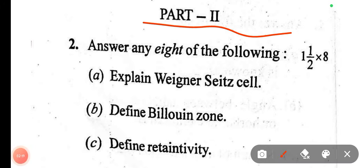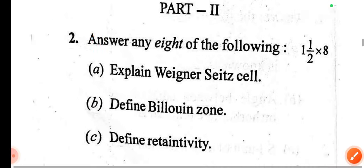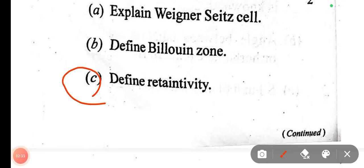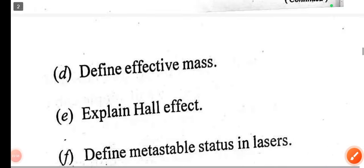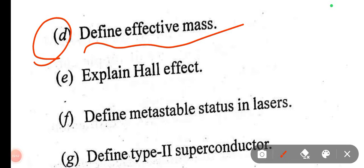Part 2 of the unit: explain where the Wigner-Seitz cell is. Then define the Brillouin zone. Then define retentivity. Define the effective mass.